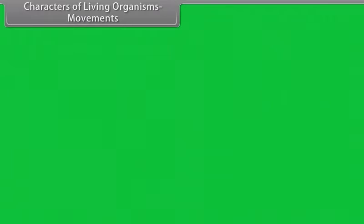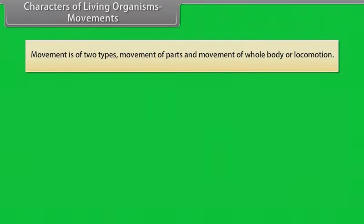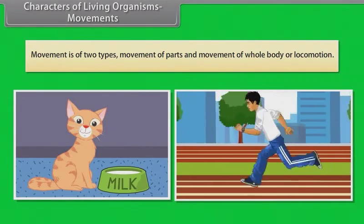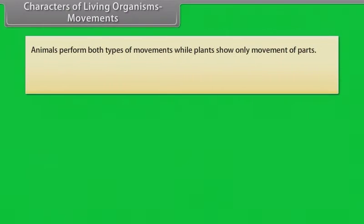Characters of living organisms - Movements: Movement is of two types: movement of parts and movement of whole body or locomotion. Animals perform both types of movements while plants show only movement of parts.